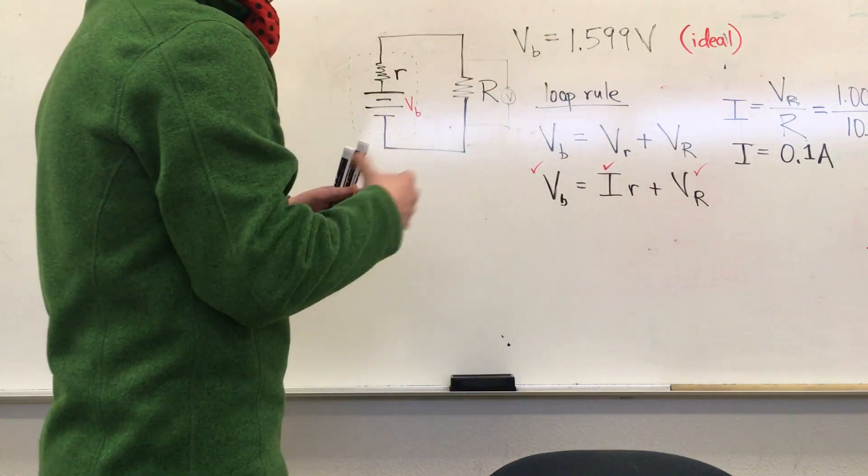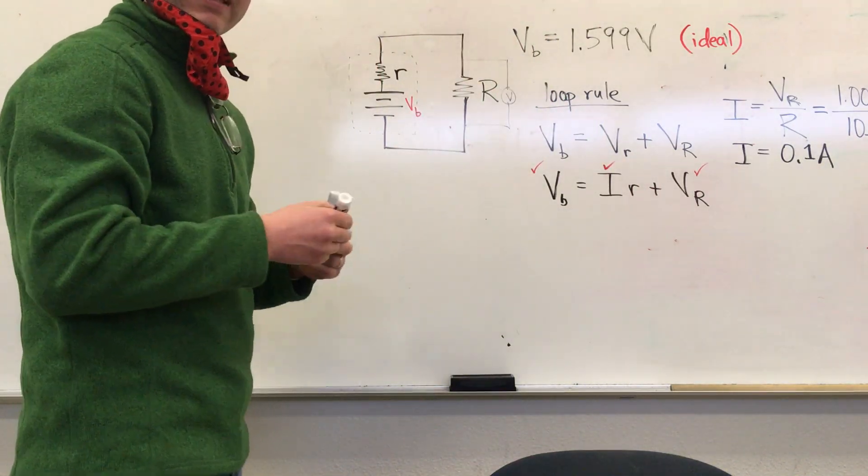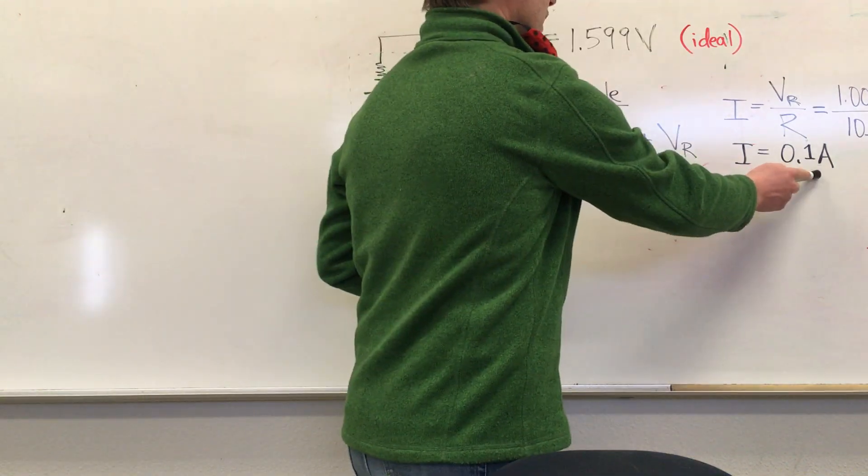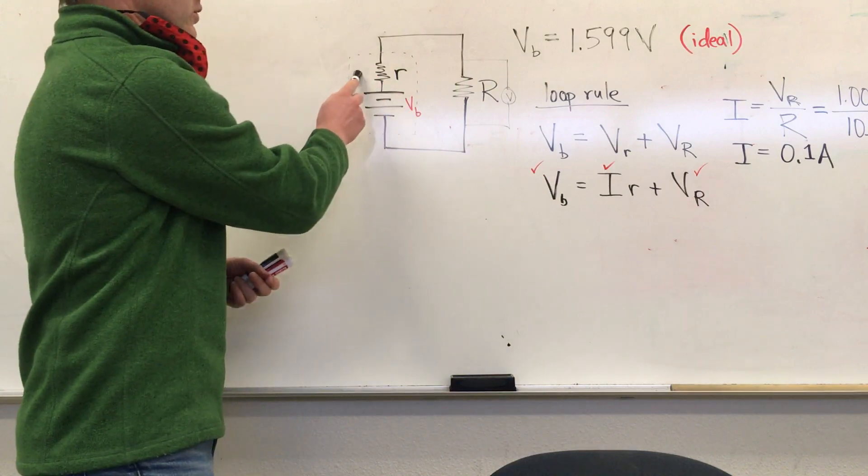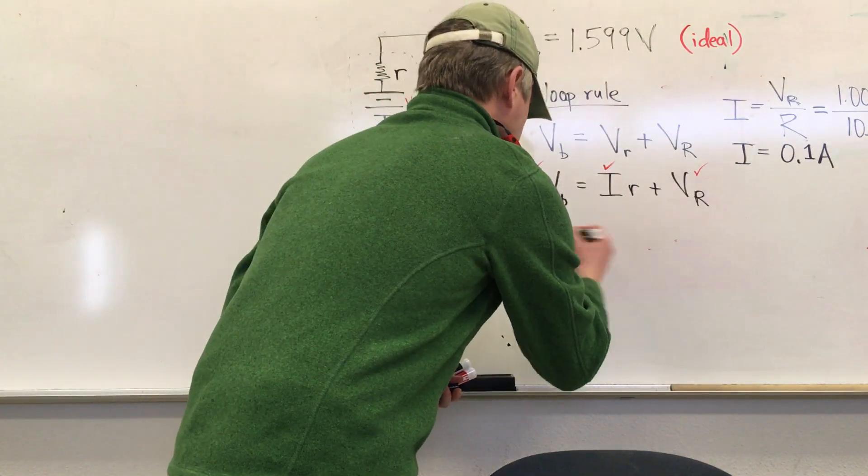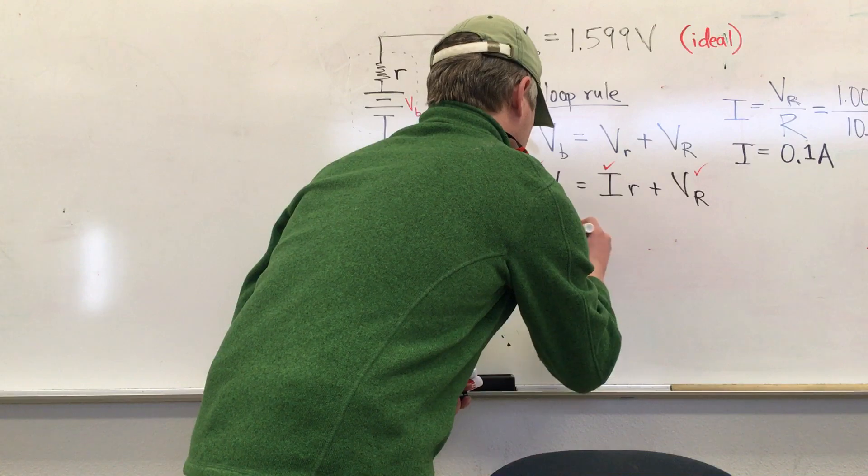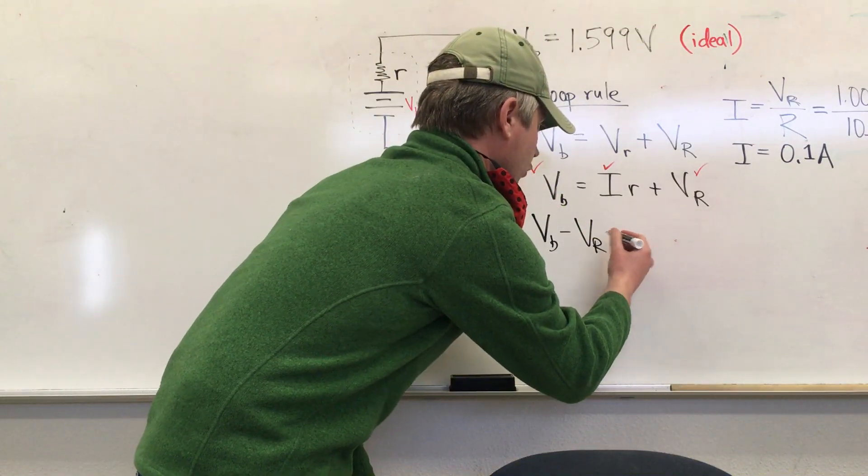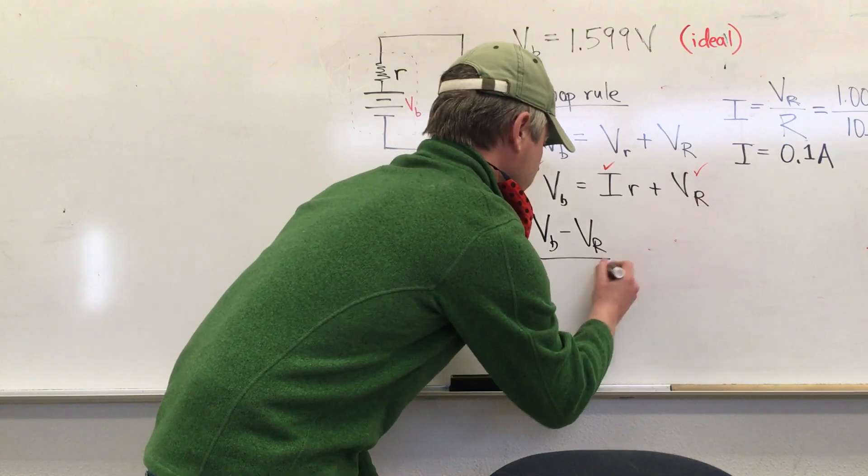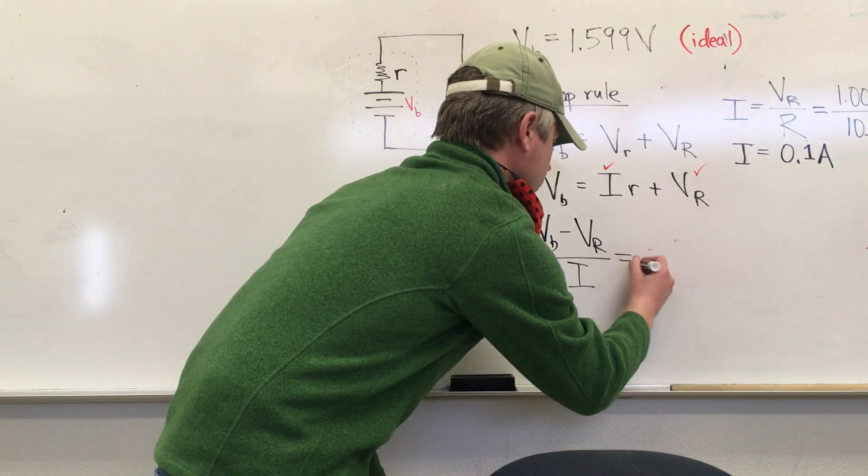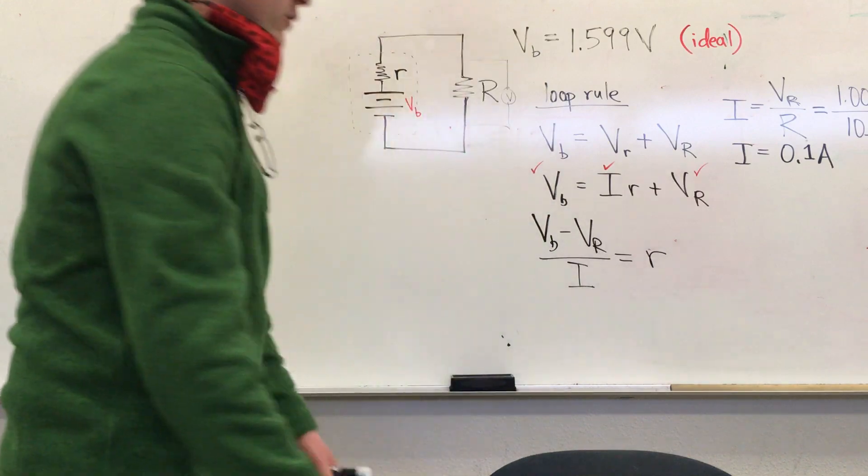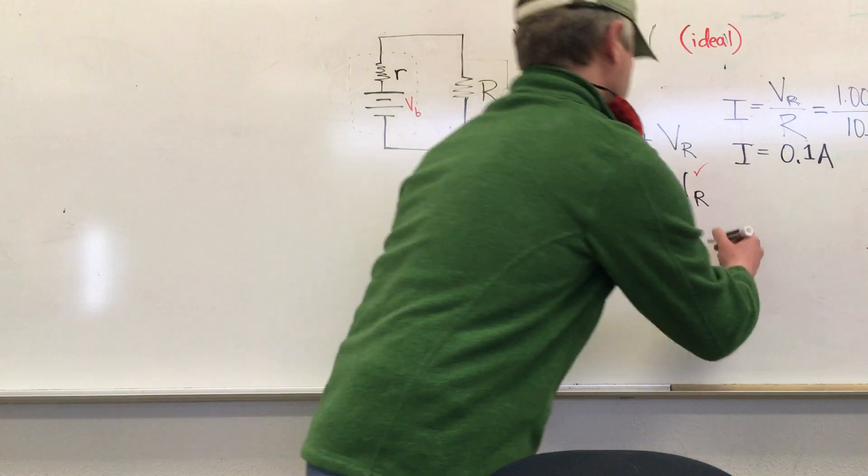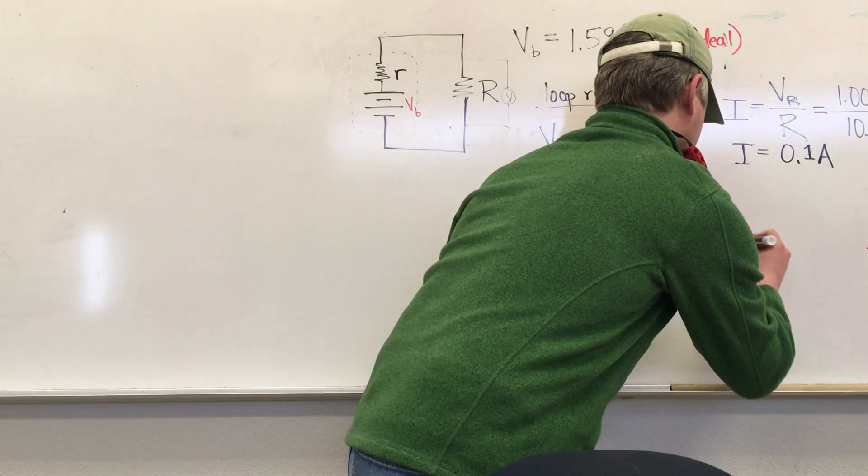So now in our loop rule we've got this one as well, so all we need to do is a little bit of algebra and we will arrive at the internal resistance of the battery when it is pushing around a tenth of an amp through its internal resistance. First subtract V sub R from both sides, then divide both sides by I to get little r all by itself.